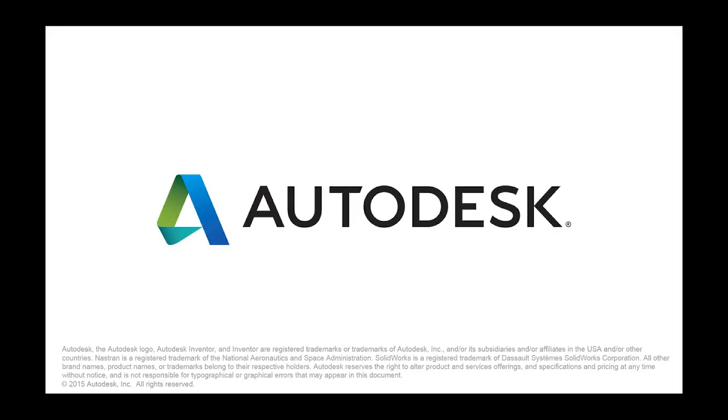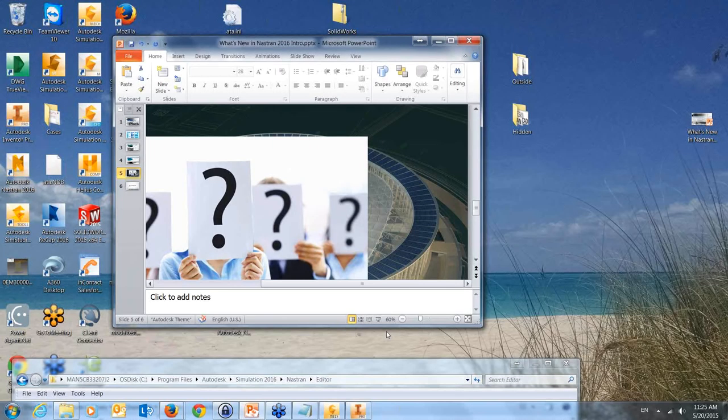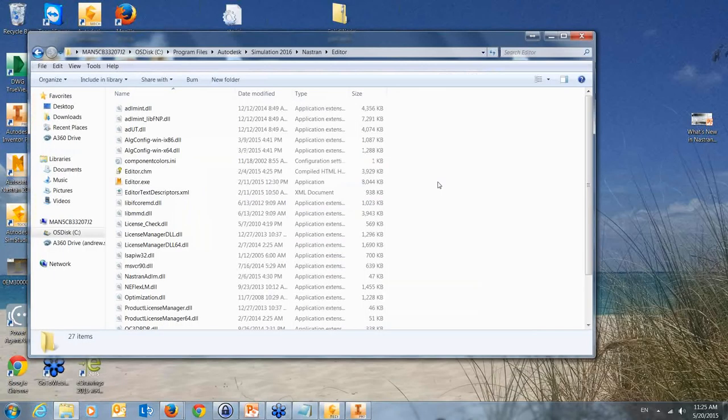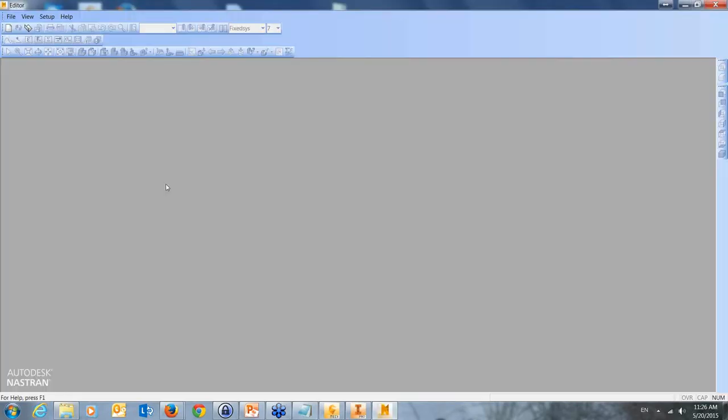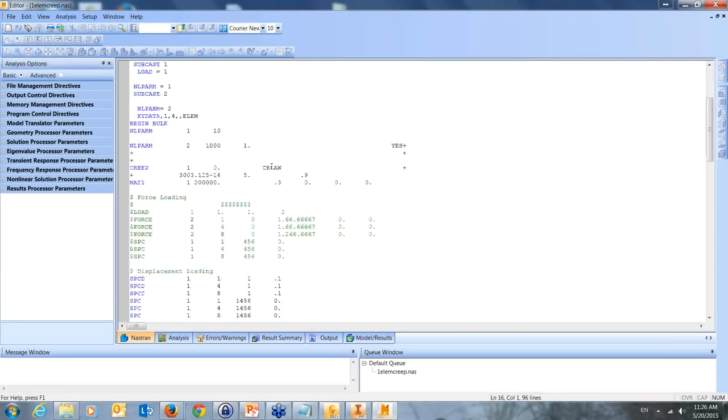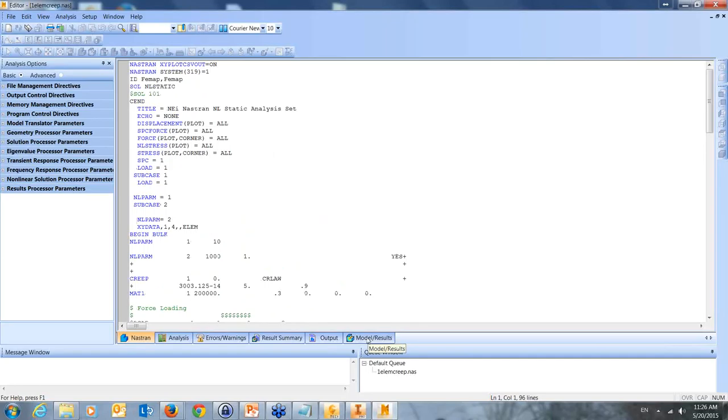And I'll show my screen. So there's a couple of different ways that we can go about this. So first, if you want to open up the editor directly, you can simply go into your program files, Autodesk, Stimulation 2016, Nastran, and then editor. And we can open up the editor this way. And we'll see if we have got a clip model that I've been working on here.